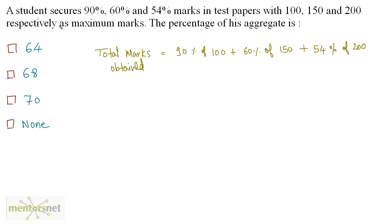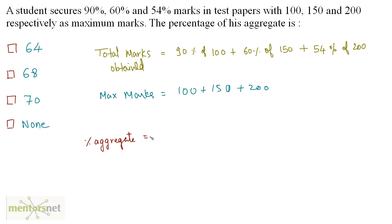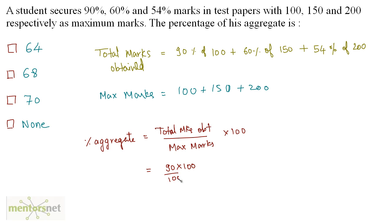The total maximum marks equals 100 plus 150 plus 200. The percentage aggregate is given by total marks obtained divided by maximum marks, times 100. This equals 90% of 100 plus 60% of 150 plus 54% of 200, all divided by the total maximum marks — that is, 90/100 times 100, plus 60/100 times 150, plus 54/100 times 200.